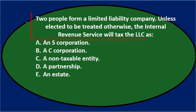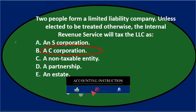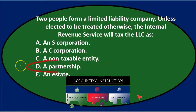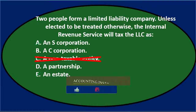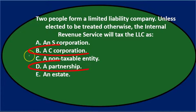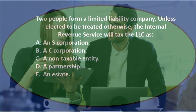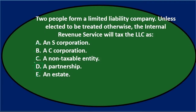Going through again: two people form a limited liability company — unless elected otherwise, the IRS will tax the LLC as B) a C corporation, C) a non-taxable entity, or D) a partnership. I'll remove the non-taxable entity. The main options are B and D. Between the two, the LLC will typically be taxed as a partnership — it's a flow-through entity, and we do all the accounting for it in a similar fashion as we would with a partnership.